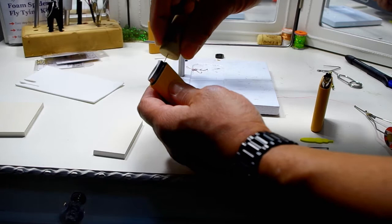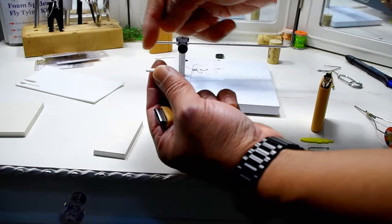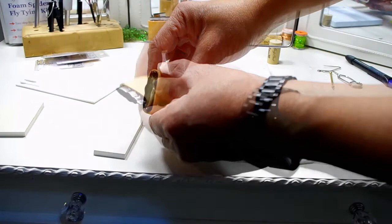Just pop it out again and this is the one that we'll be using a size 10 hook with. Normally we'd be fishing it in this manner or at least tying it in this manner to make the stonefly pattern. Instead we're gonna flip it around and make that the head of the grasshopper.